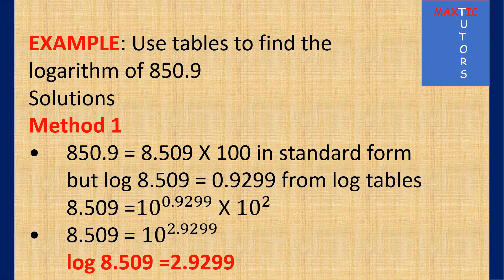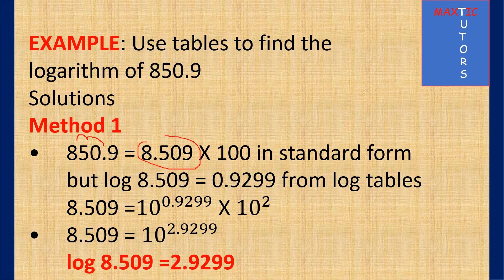Let's go to an example. Use tables to find the logarithm of 850.9. 850.9 can be written in standard form as 8.509 times 100, because you shifted 2 times, and 100 is 10 raised to power 2. When you look at the four-figure tables, the log of 8.509 is 0.9299. So 8.509 will now be 10 raised to power 0.9299. Times 10 raised to power 2. So you will have 0.9299 plus 2, because this is the law of indices — when you multiply with the same base, you add the powers.